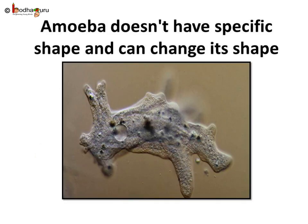Some cells don't have any specific shape and can change shape. For example, amoeba is made of one cell only, and it can change its shape for movement and for capturing food. The white blood cells in our blood also don't have any specific shape. But while a white blood cell is just a cell, amoeba is a full-fledged organism capable of independent existence.